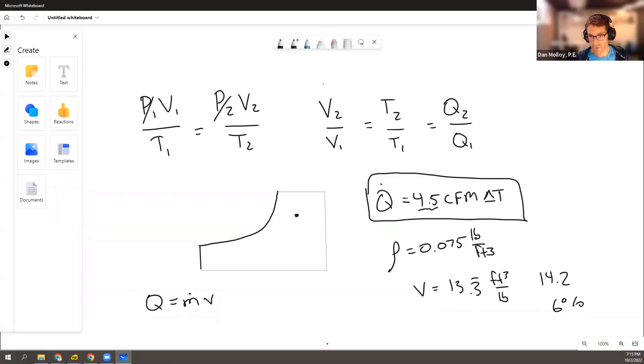The answer is, the closer you are to the density being this, or the specific volume being this, the more likely that you're fine using the rule of thumb. And the further you are, the less likely you're fine.